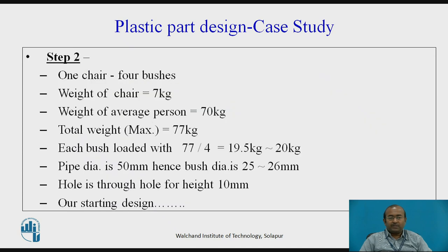In step 2, for one chair there are 4 bushes. The weight of the chair is 7 kg, and the weight of the average person is 70 kg. Total weight is maximum about 77 kg. Each bush is loaded with 77 divided by 4, that is around 20 kg. The pipe diameter is about 50 mm; hence, the bush diameter is about 25 — let us say 26 mm, an even complete number. The hole is through, and for the height, 10 mm. Let us now start designing.